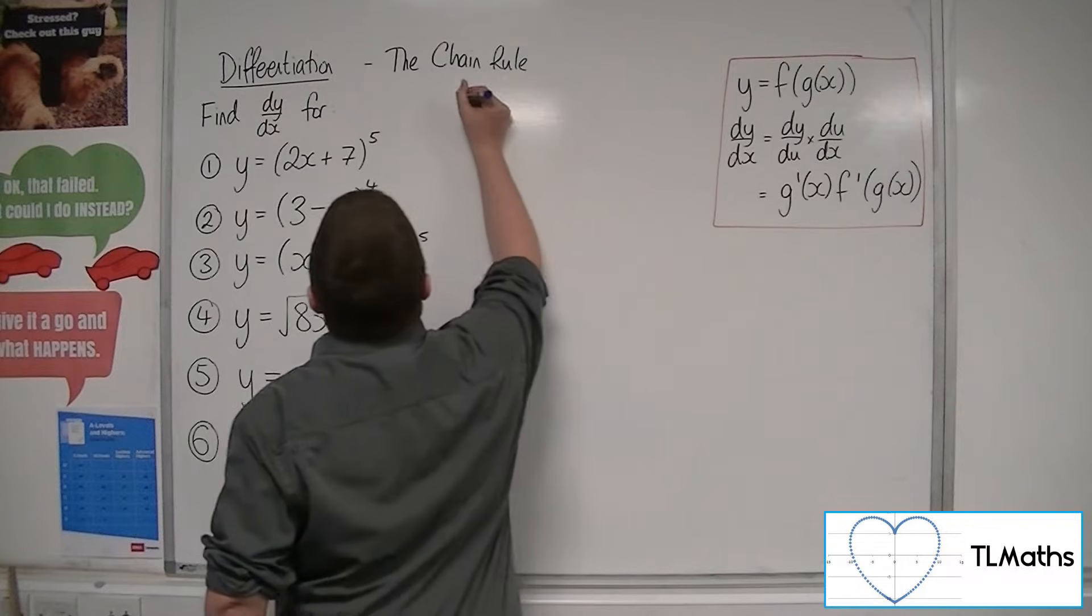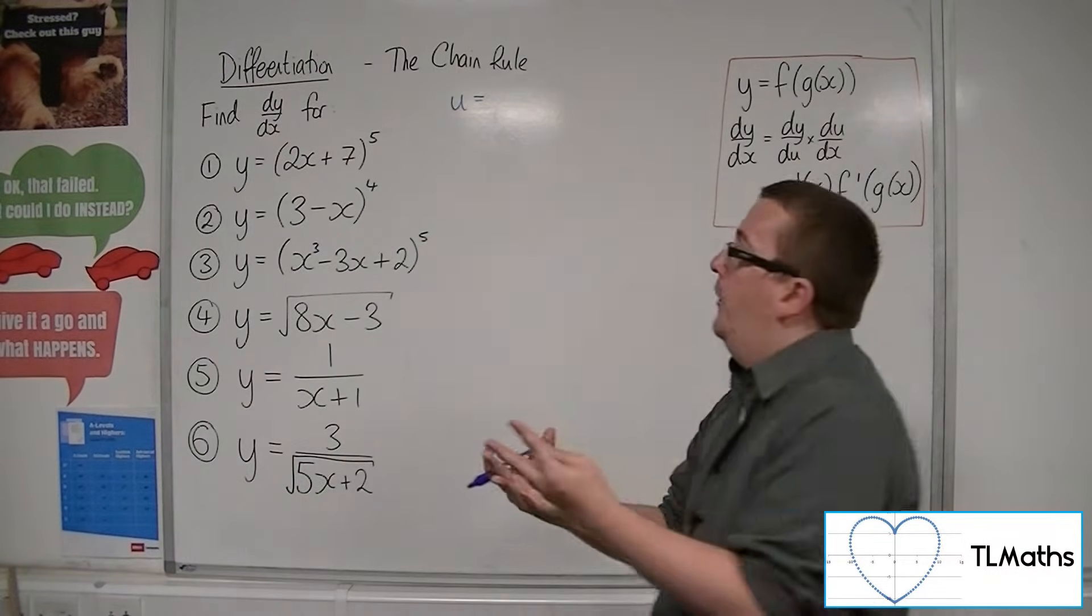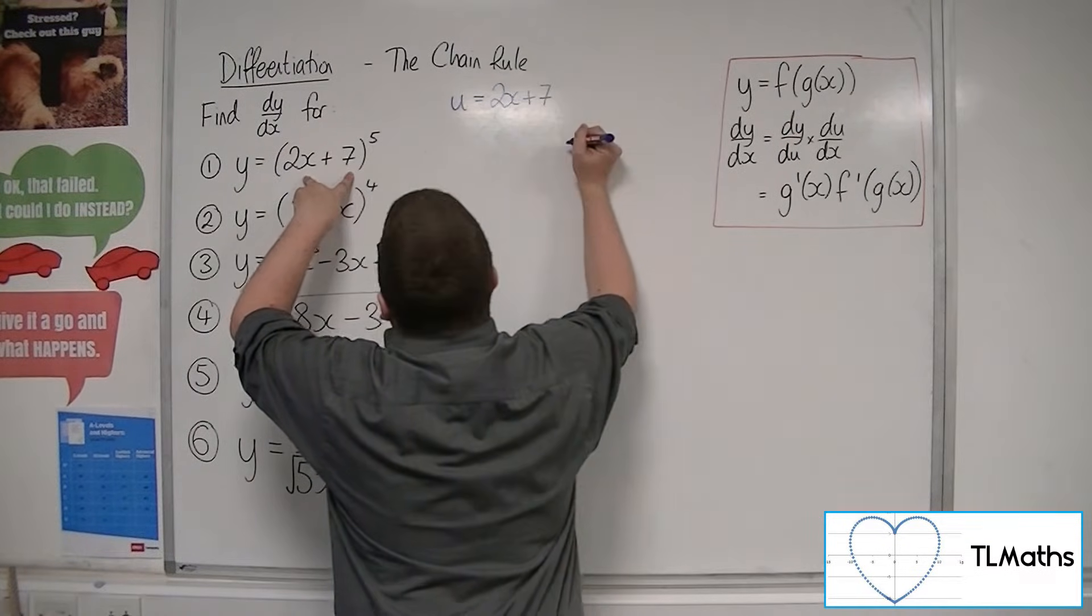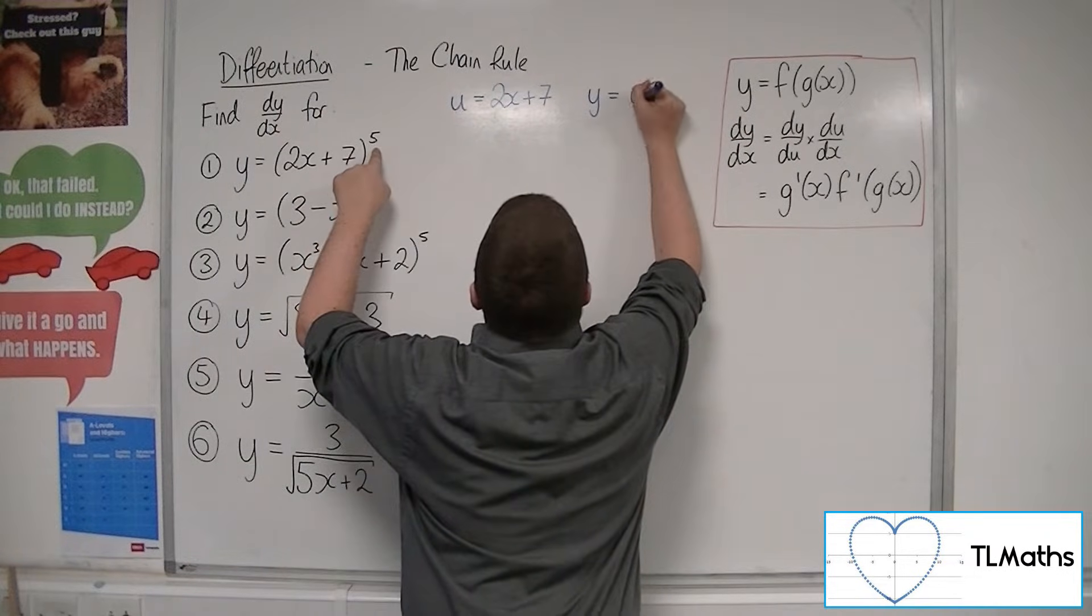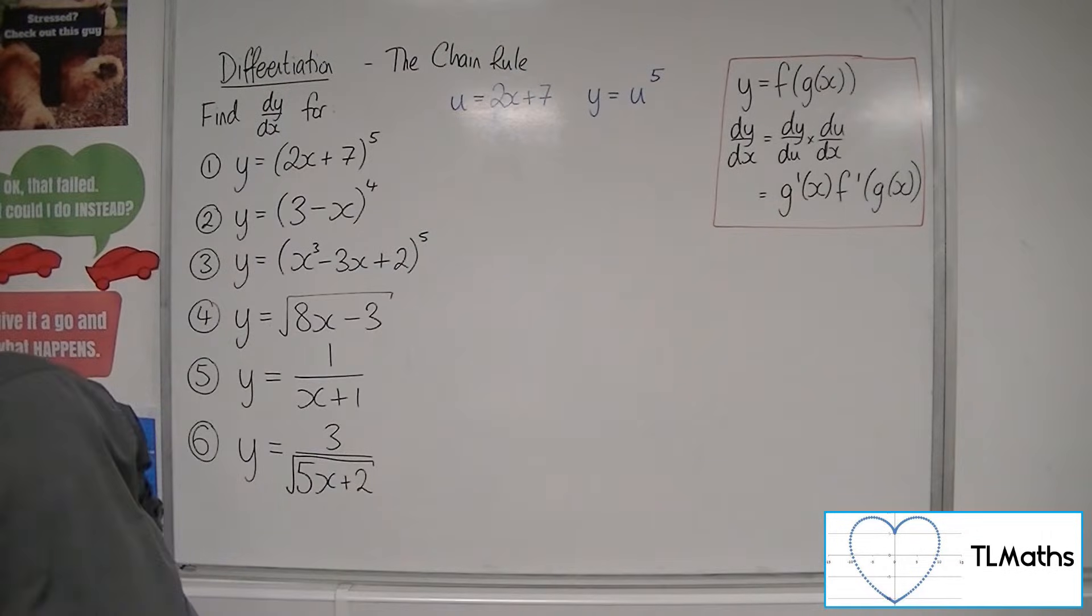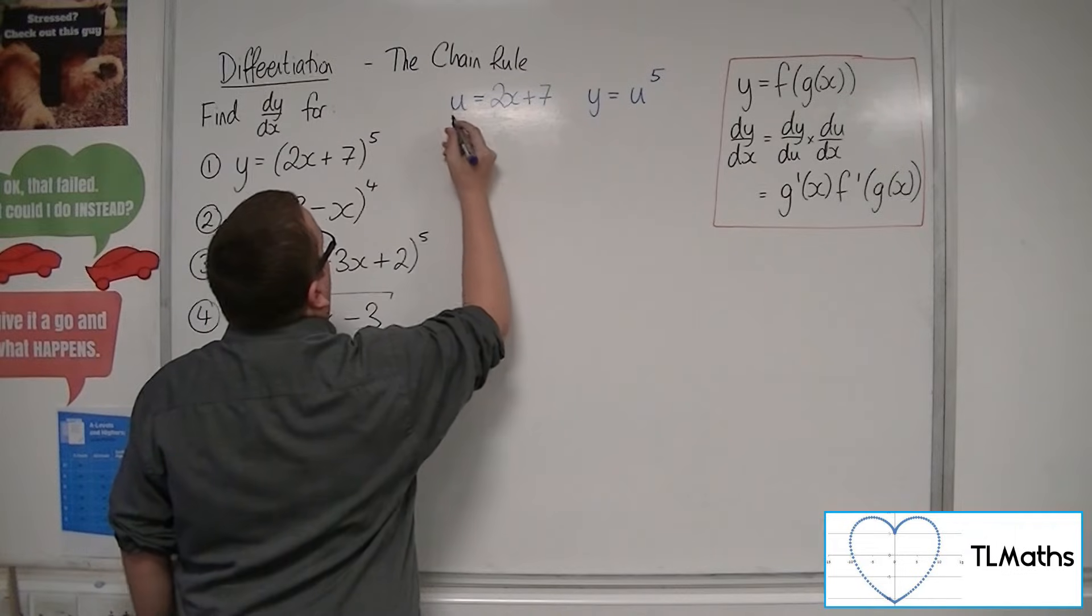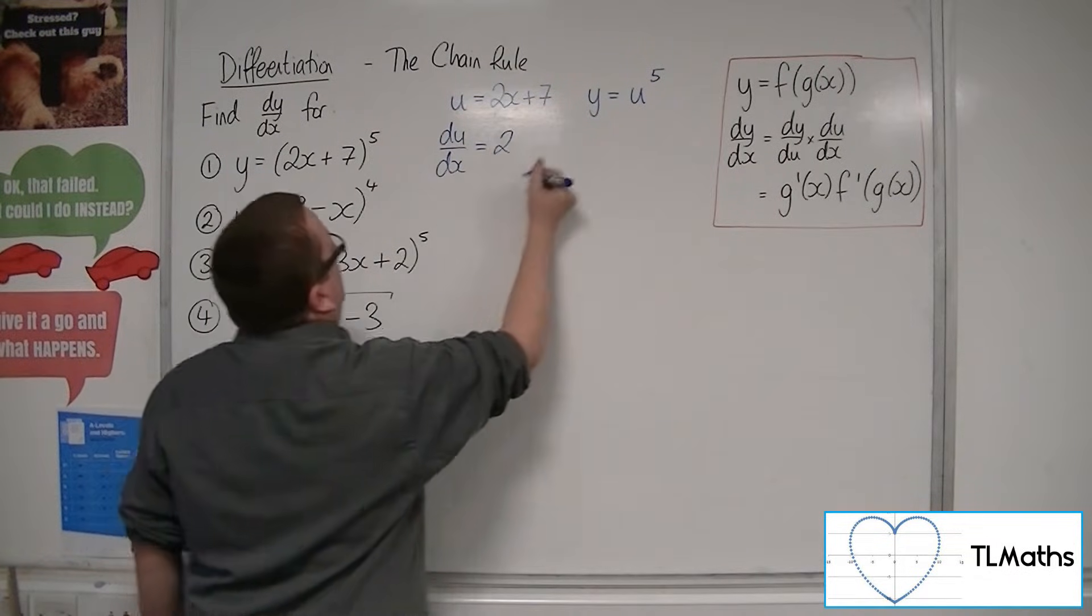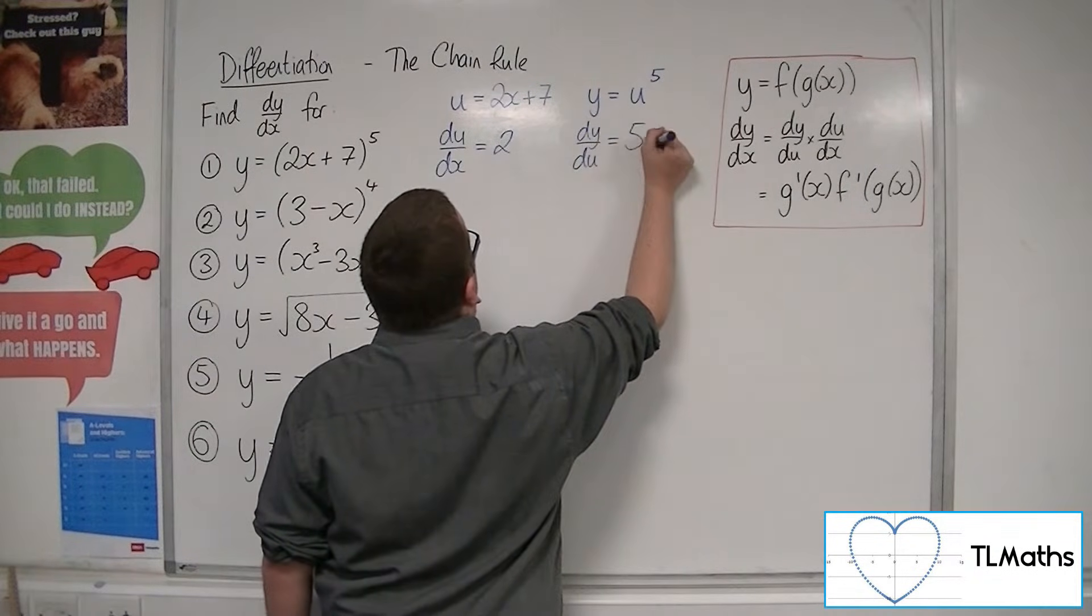So first of all, what we do is we write down what u is, that is the function that is inside. So that's the 2x plus 7. And then you've got y is going to be now u to the power of 5. So we then differentiate, so we get du by dx will be 2. And we differentiate this with respect to u and we get 5u to the 4.